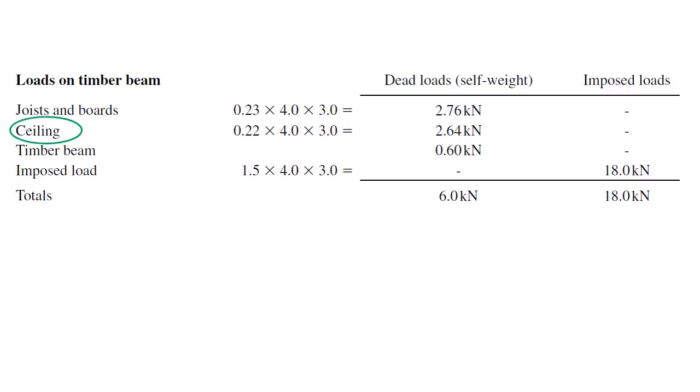Second load type is ceiling. This is the value of self-weight of ceiling, 0.22, which is given in the design data. Again, 4 times 3 means the area of the shaded area. Once we multiply these three values, we can get 2.64 kN.